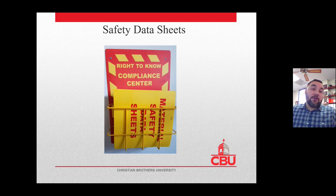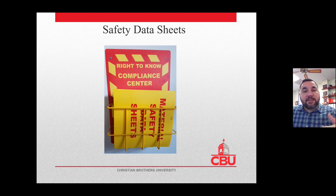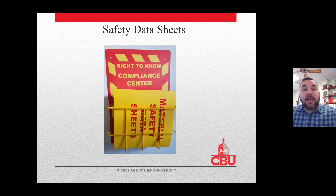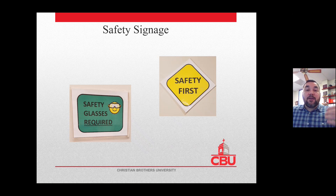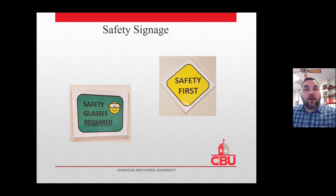Safety data sheets, historically called material safety data sheets, contain safety information for chemicals or materials in a particular lab. If you're dealing with a hazardous chemical or material, refer to the safety data sheet before handling it so you can take proper safety measures. For safety signage, always pay attention to signs posted near equipment or experiments, as they indicate specific safety hazards or concerns affiliated with that piece of equipment.